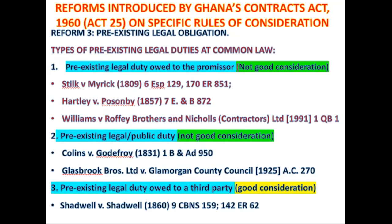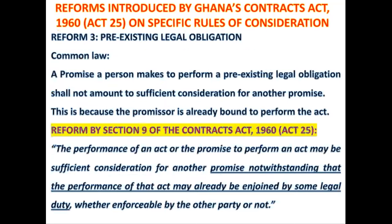Now there has been a modification done to this provision under Ghana's Contracts Act of 1960 Act 25 by Section 9. Remember, the general position under the common law is that a promise to perform a pre-existing legal obligation — that performance shall not amount to sufficient consideration for another promise. How has Section 9 modified this common law position? Section 9 says that the performance of an act, or the promise to perform an act, may be sufficient consideration for another promise, notwithstanding that the performance of that act may already be enjoined by some legal duty, whether enforceable by the other party or not.